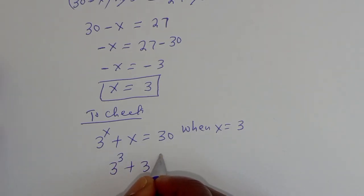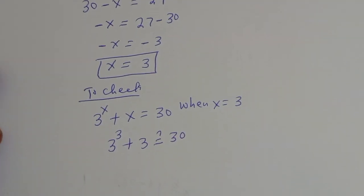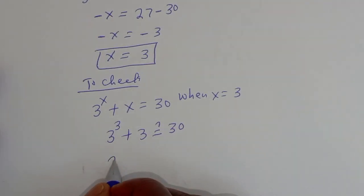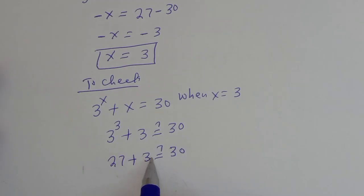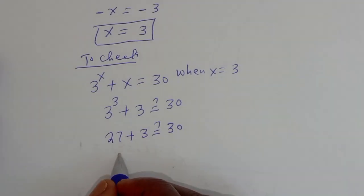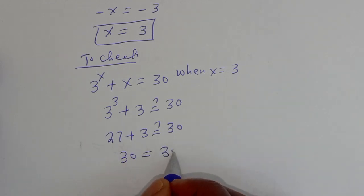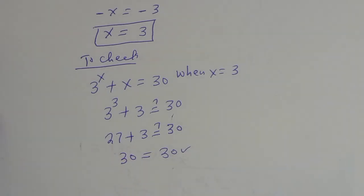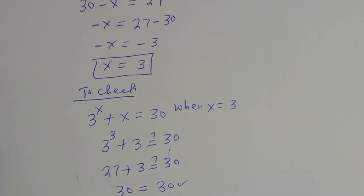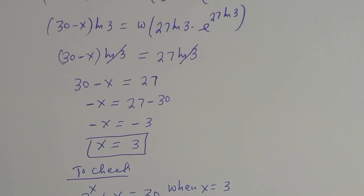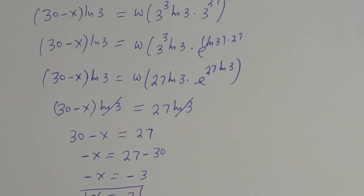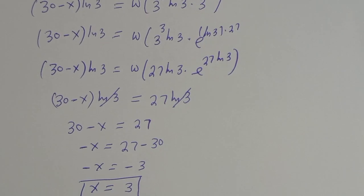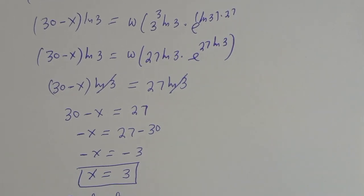3 raised to power 3 is 27, plus s which is 3, must be equal to 30. Then 27 plus 3 equals 30, which is equal to 30 — which is true! If you enjoyed the video, please don't forget to like, share, comment, and subscribe. Thank you, bye bye!